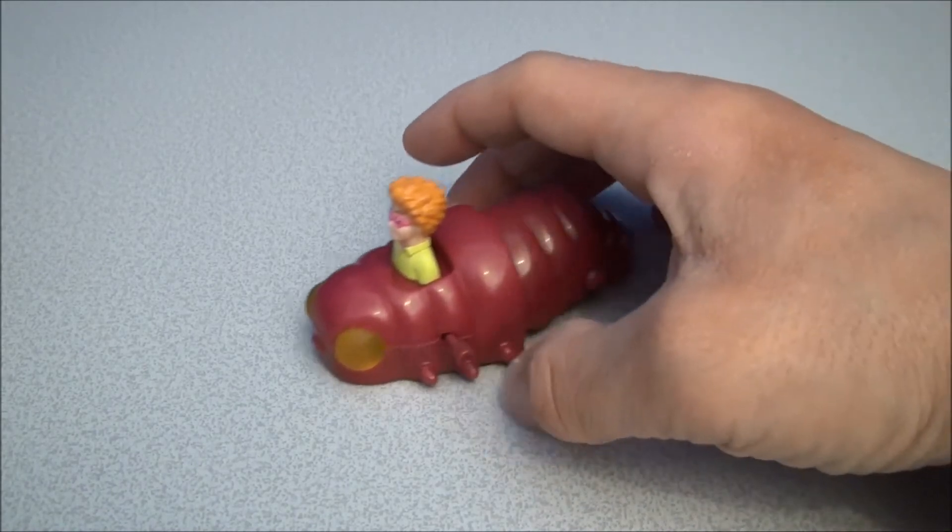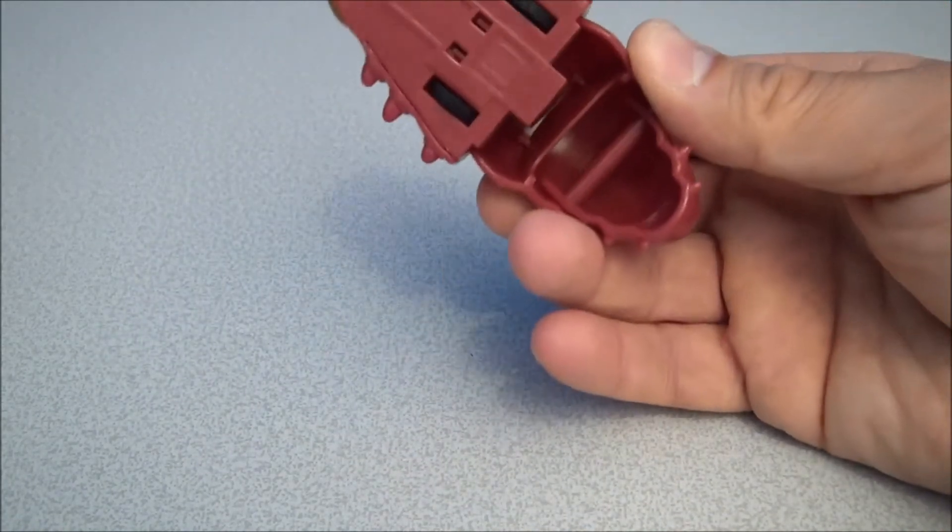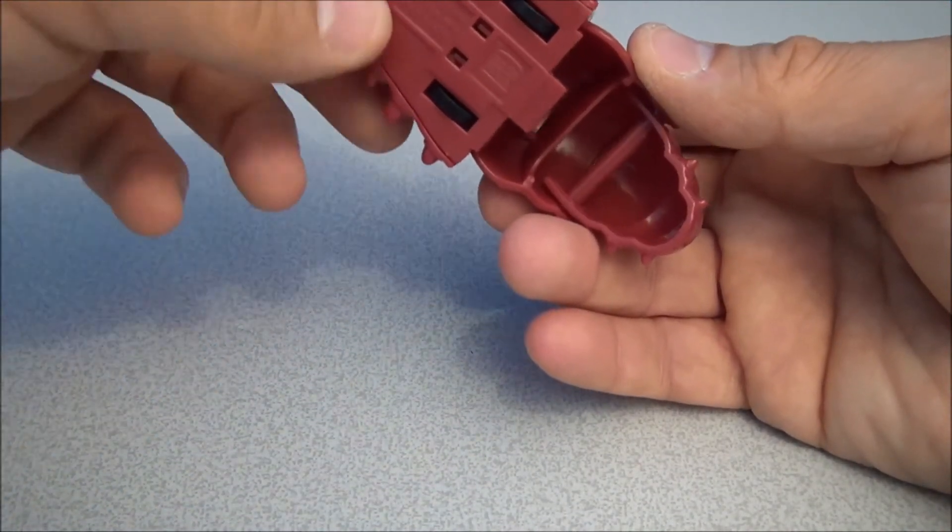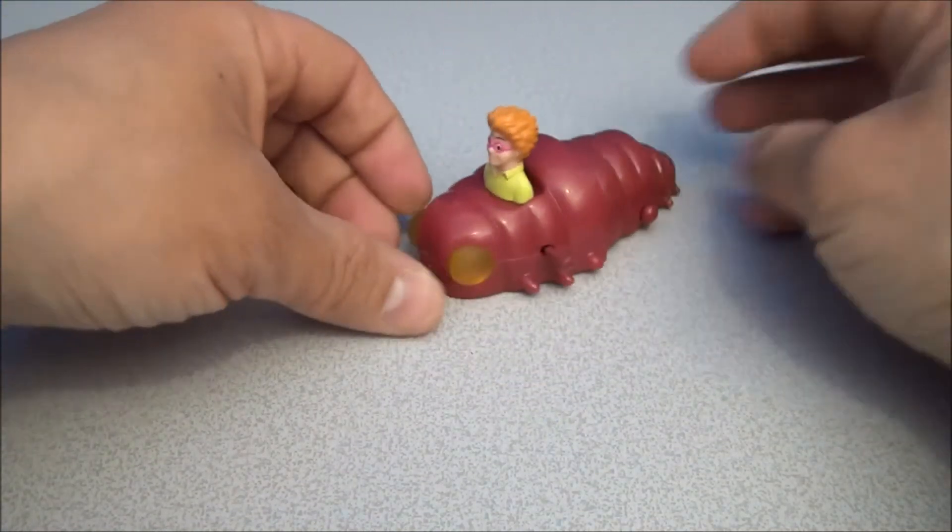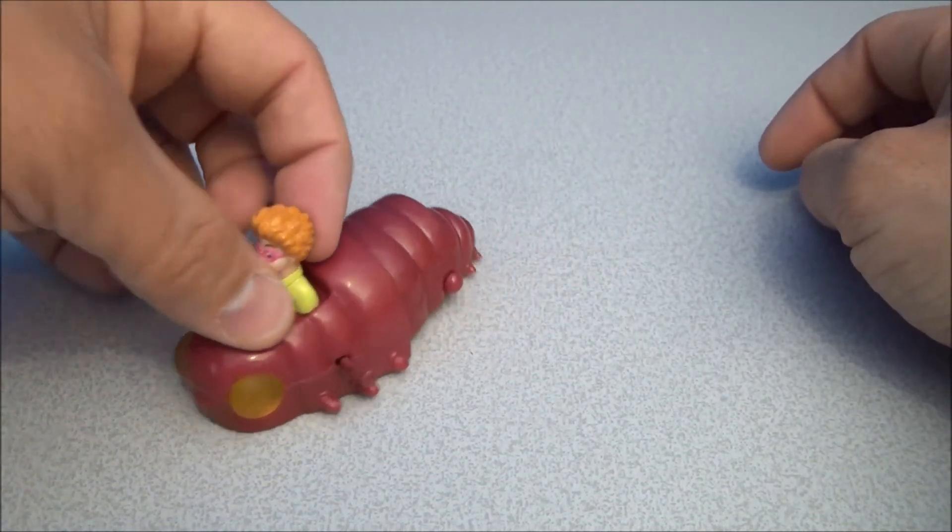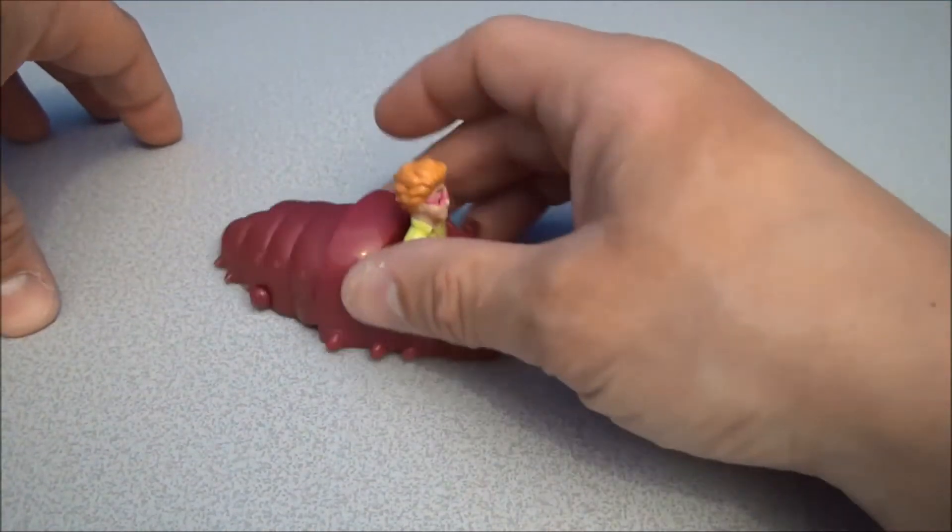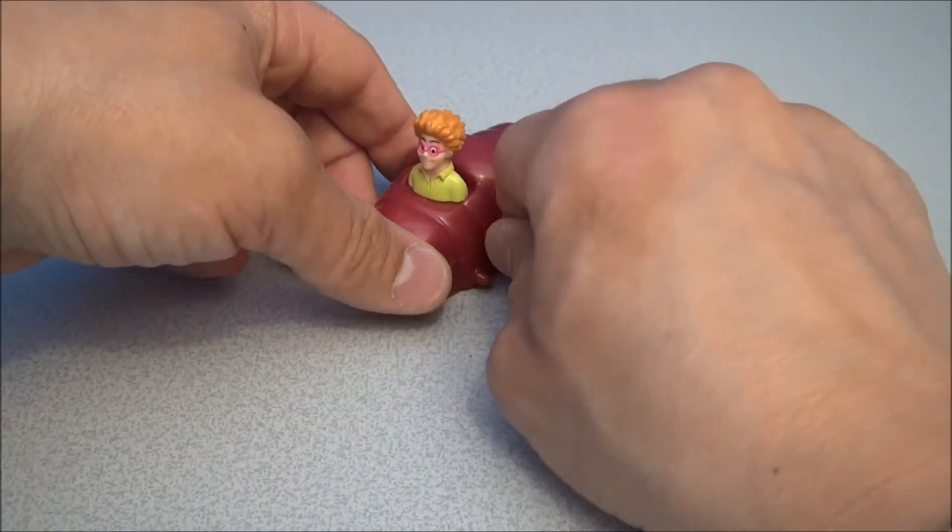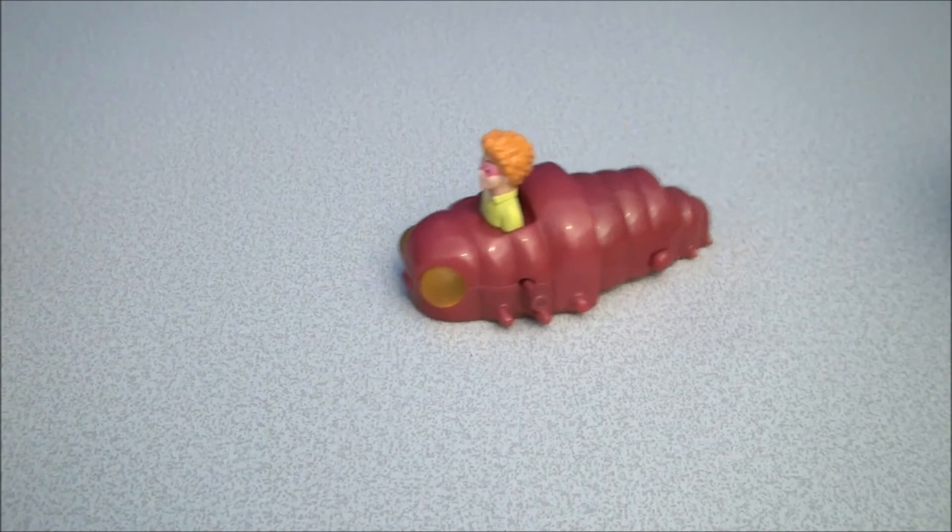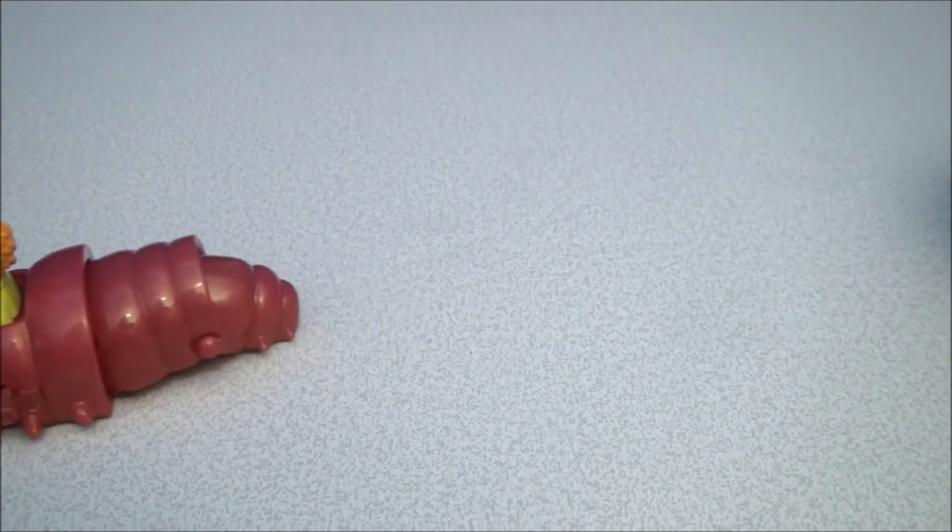And I believe when you turn this, IQ's eyes are supposed to light up. There was a little battery thing in here and I believe these eyes are supposed to glow, but they have since died. However, that is a very cool effect that doesn't take any batteries. It just takes a little winding and now you got a creepy little slug.